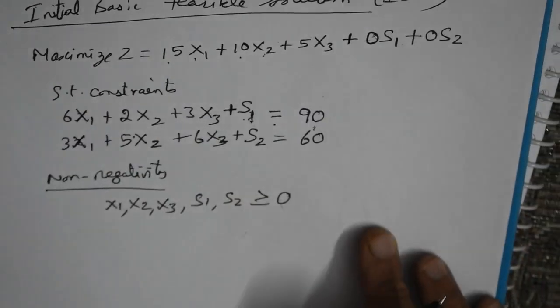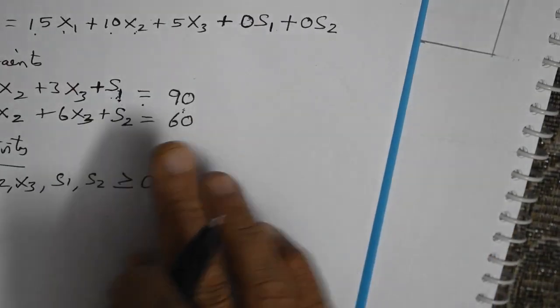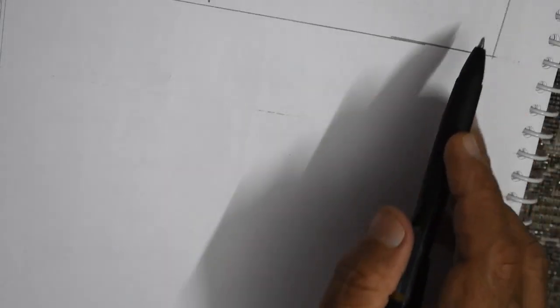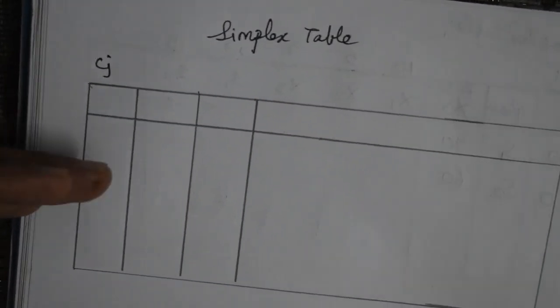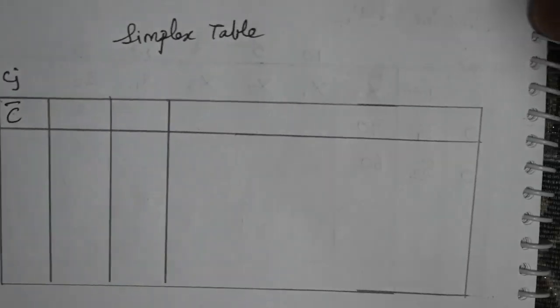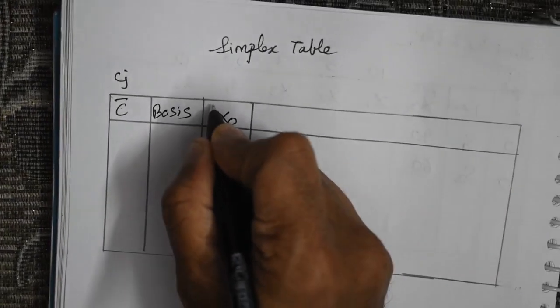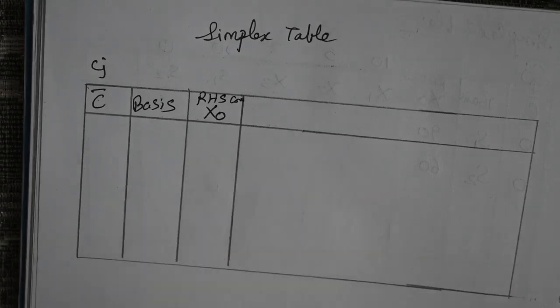Using the IBFS, we will now prepare the simplex table. First, draw the simplex table. Every simplex table has Cj on top. Compulsorily, it has three fixed columns: c-bar, basis, and x0. x0 is the right-hand side constant — the 90 and 60 from the constraint equations.